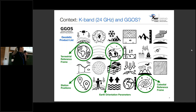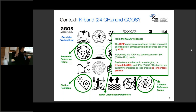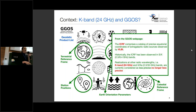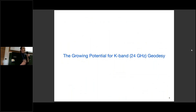VLBI is the only technique for the construction and maintenance of the celestial reference frame. The GGOS webpage says the ICRF comprises a catalogue of precise equatorial coordinates of quasars observed by VLBI, and that historically the ICRF has been observed in SX bands at 2.3 and 8.4 GHz. It also talks about realizations at other radio wavelengths — K-band at 24 GHz, which I'll be talking about today, and also KA band — noting these are currently considered less precise. Today I'll tell you that is no longer the case, and I'll talk about the growing potential of K-band for geodesy.